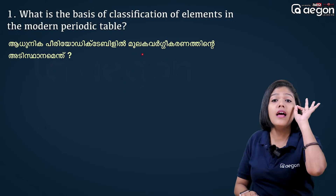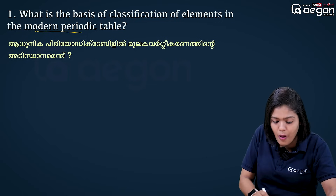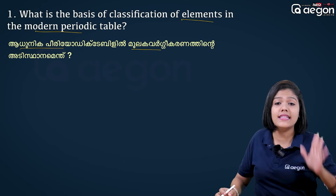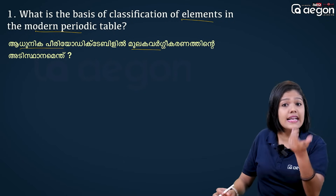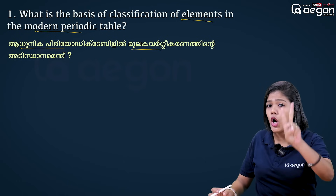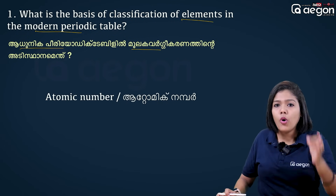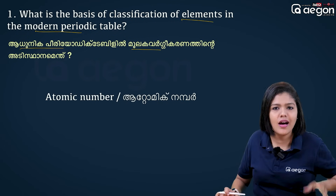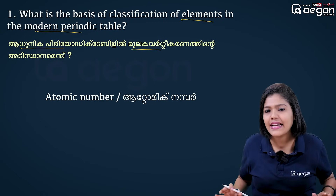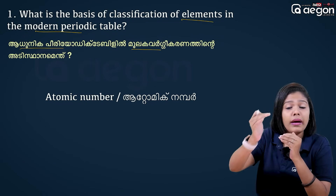In the periodic table, what is the basic classification of the elements in the modern periodic table? We will discuss atomic mass and atomic number. Atomic number is mostly used in the periodic table. The modern periodic table arranges elements in increasing order of atomic number.